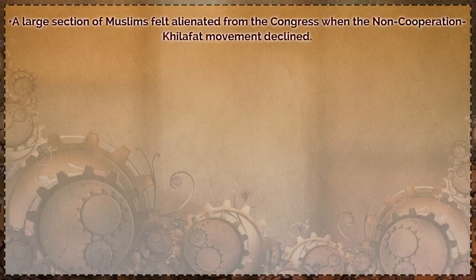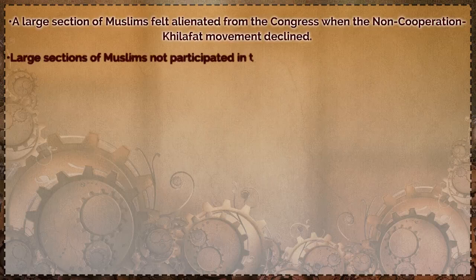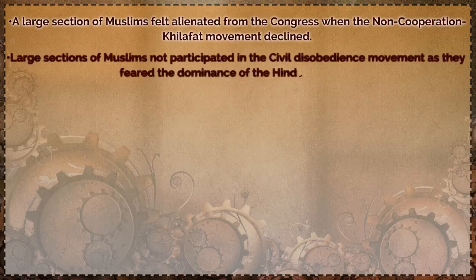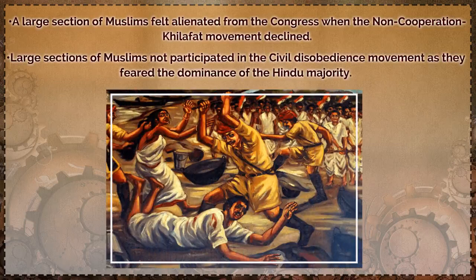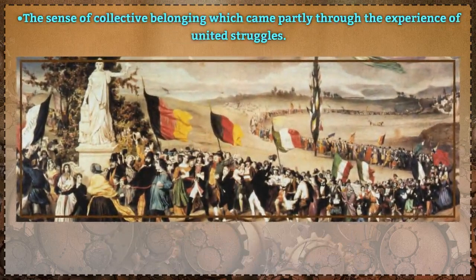After the decline of the non-cooperation Khilafat movement, a large section of Muslims became alienated from the Congress. In 1927, it appeared that unity between Congress and Muslims could be forged, but in 1928 all hope disappeared when M. R. Jayakar of the Hindu Mahasabha strongly opposed efforts at compromise at the All Parties Conference. A large section of Muslims did not participate in the civil disobedience movement as they feared the dominance of the Hindu majority.